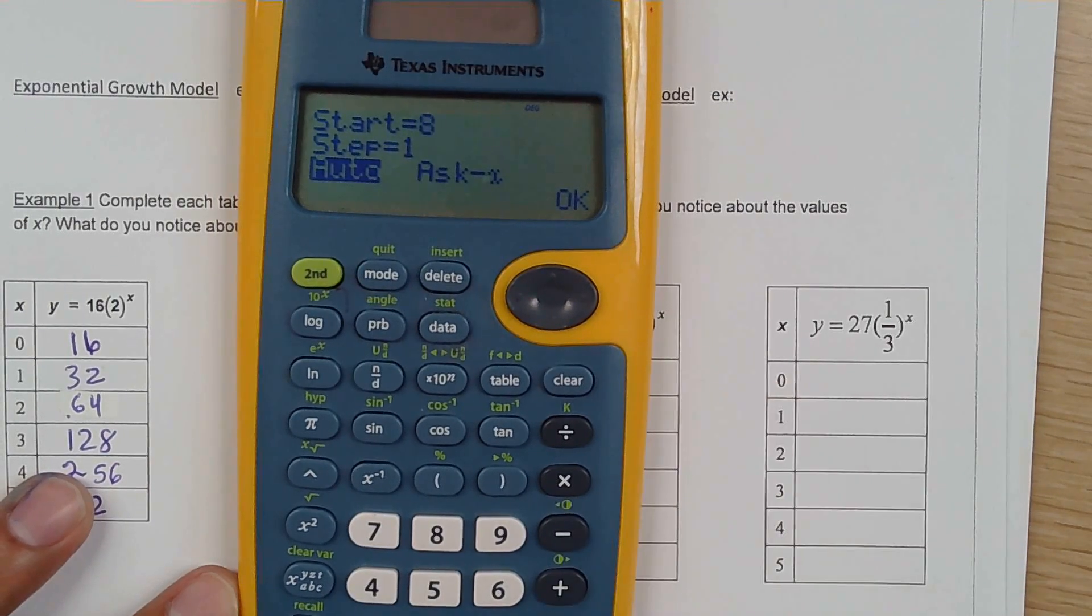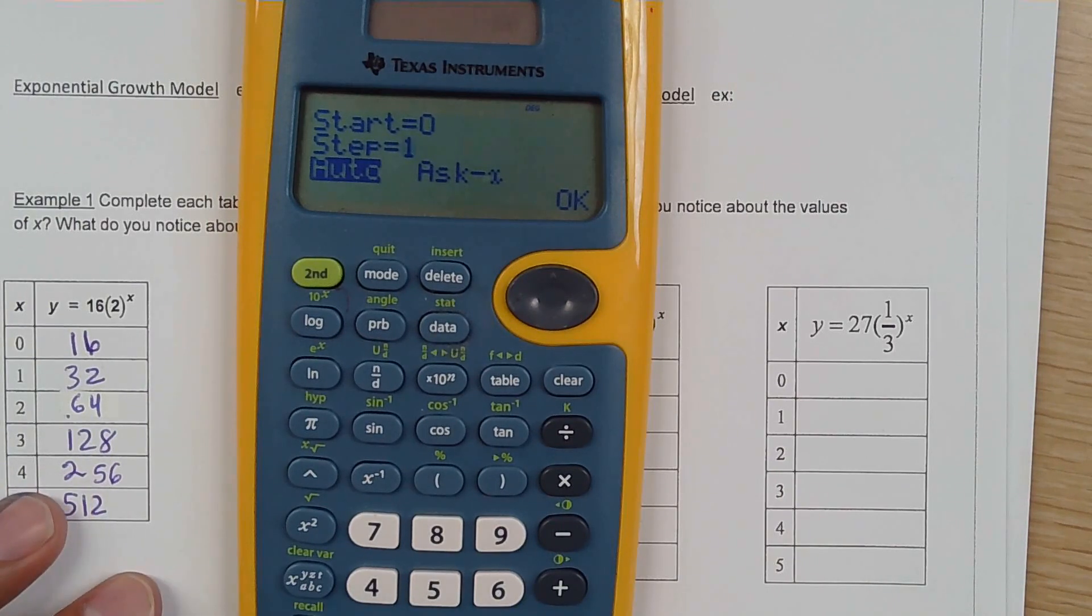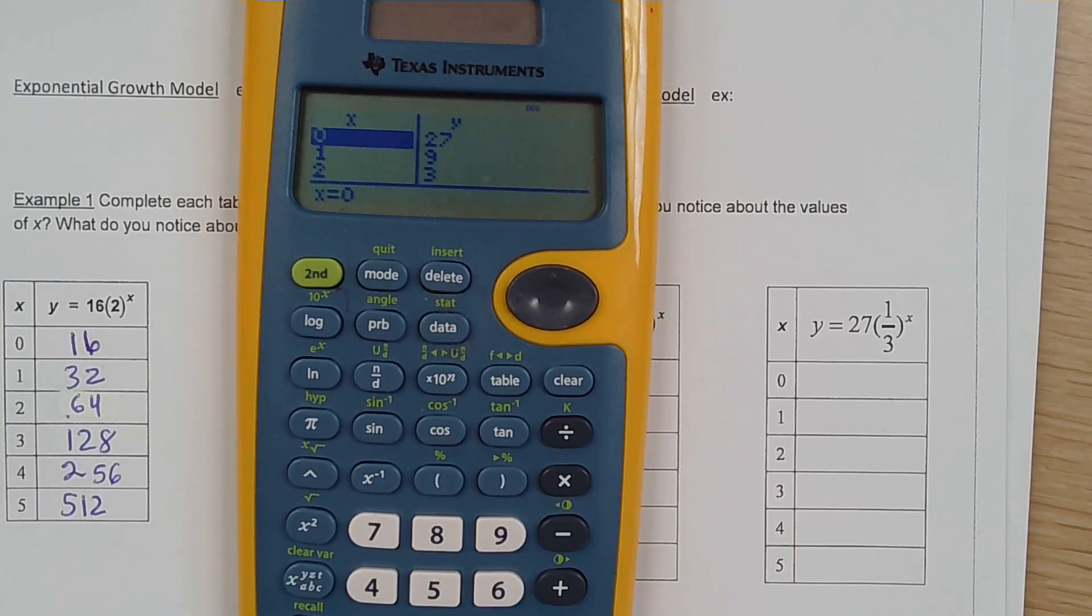Where are we starting? We're starting at 0. And we're going by increments of 1. And then we just go OK. OK.